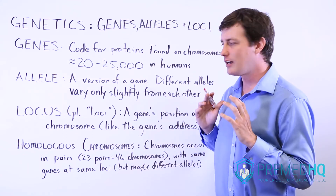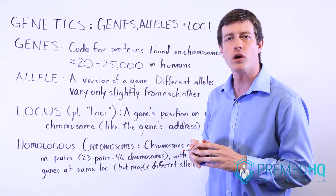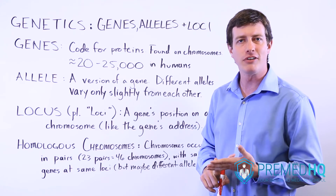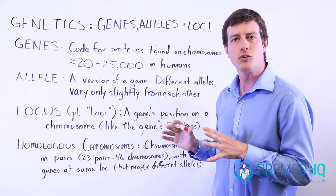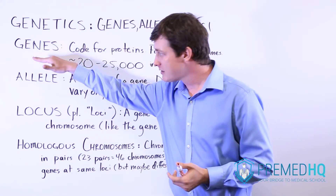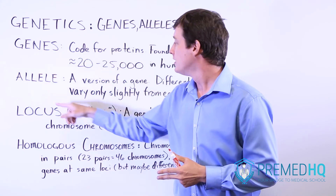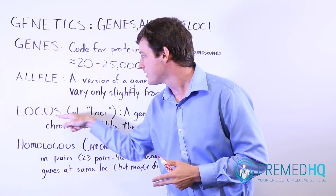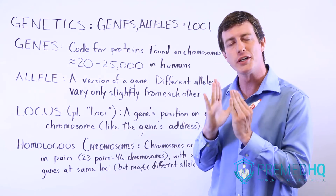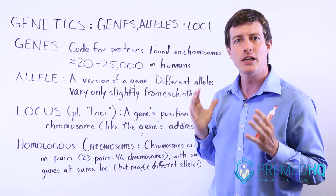Understanding alleles and their role in homologous chromosomes is very important for understanding inheritance patterns, heredity, genetic variation, and the different ways that a genotype can shape a phenotype. Genes and alleles are different — an allele is a version of a gene — but these alleles will be found at the same locus on their respective homologous chromosomes, meaning both chromosomes contain those alleles at the same locus positions.